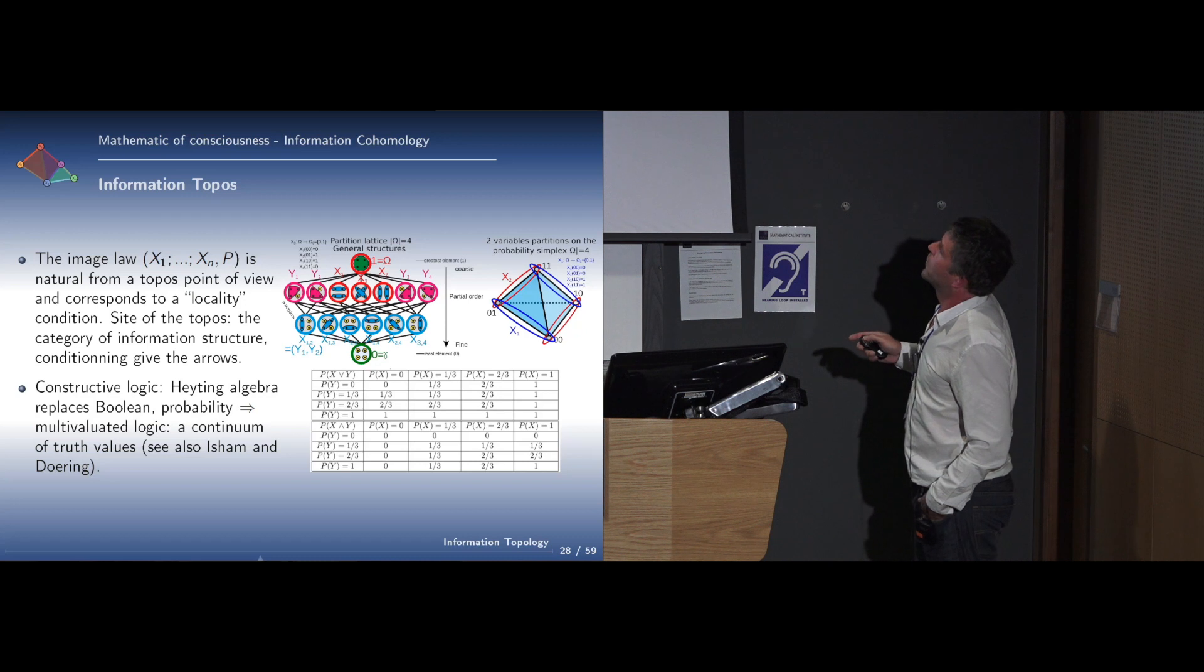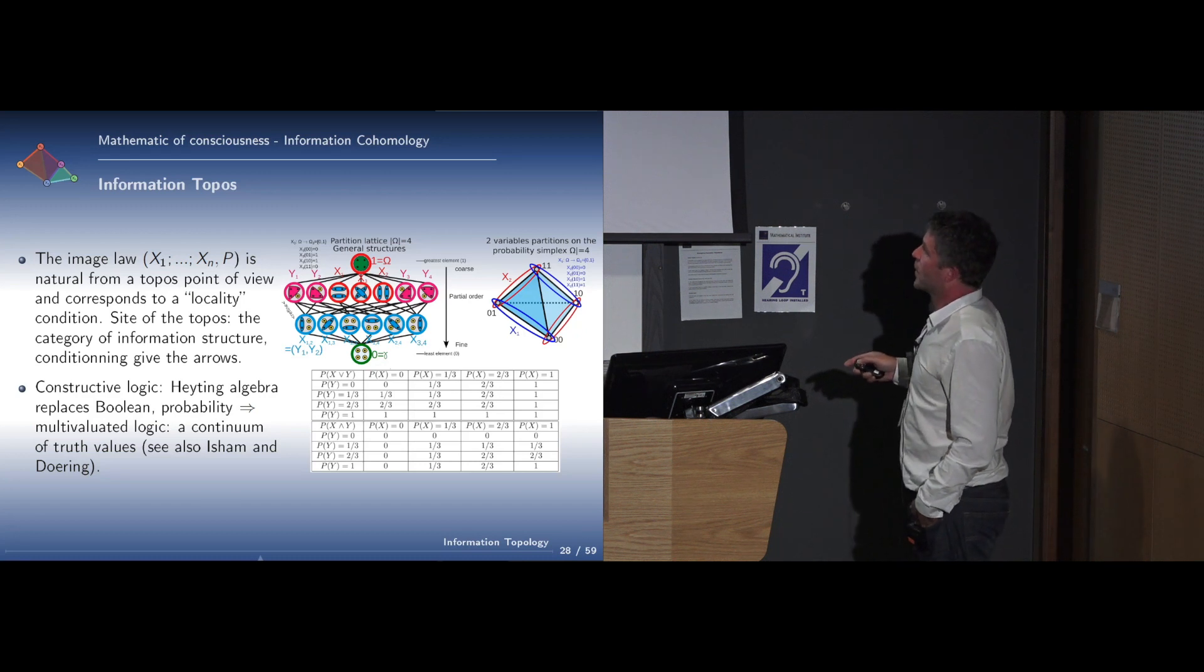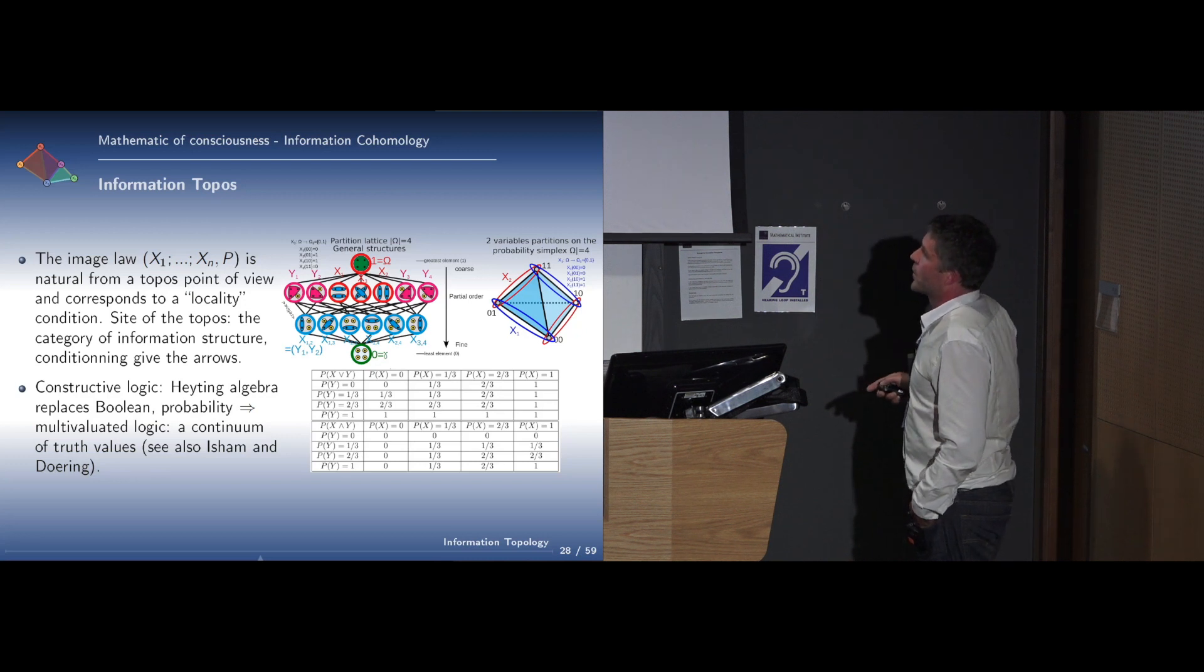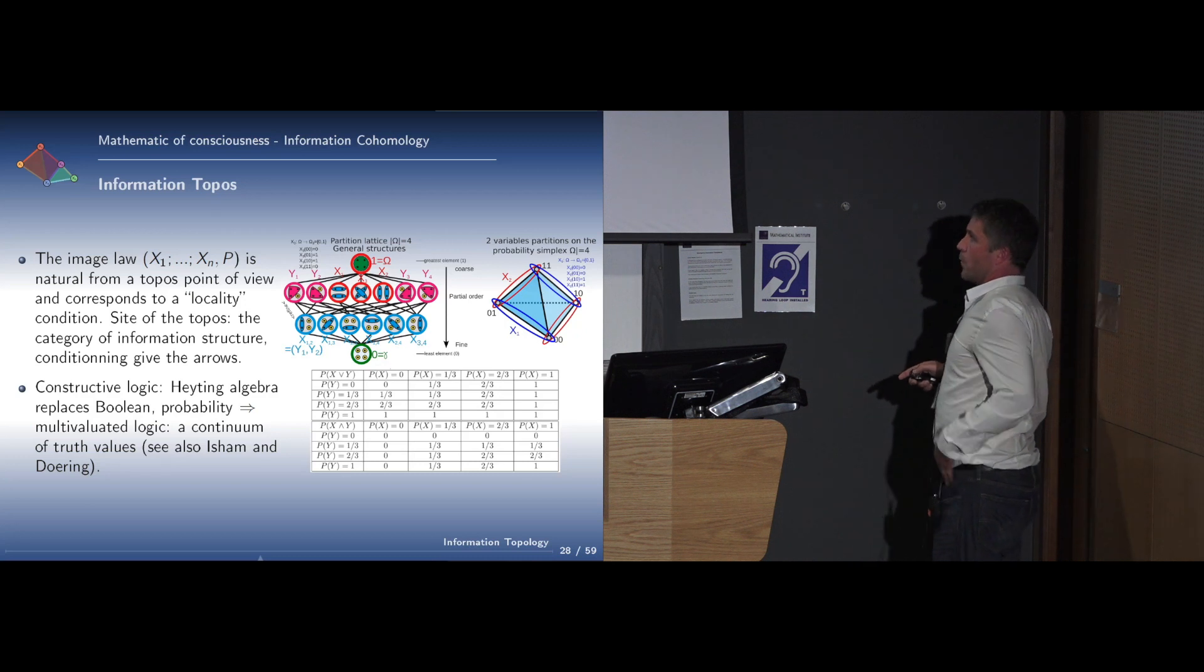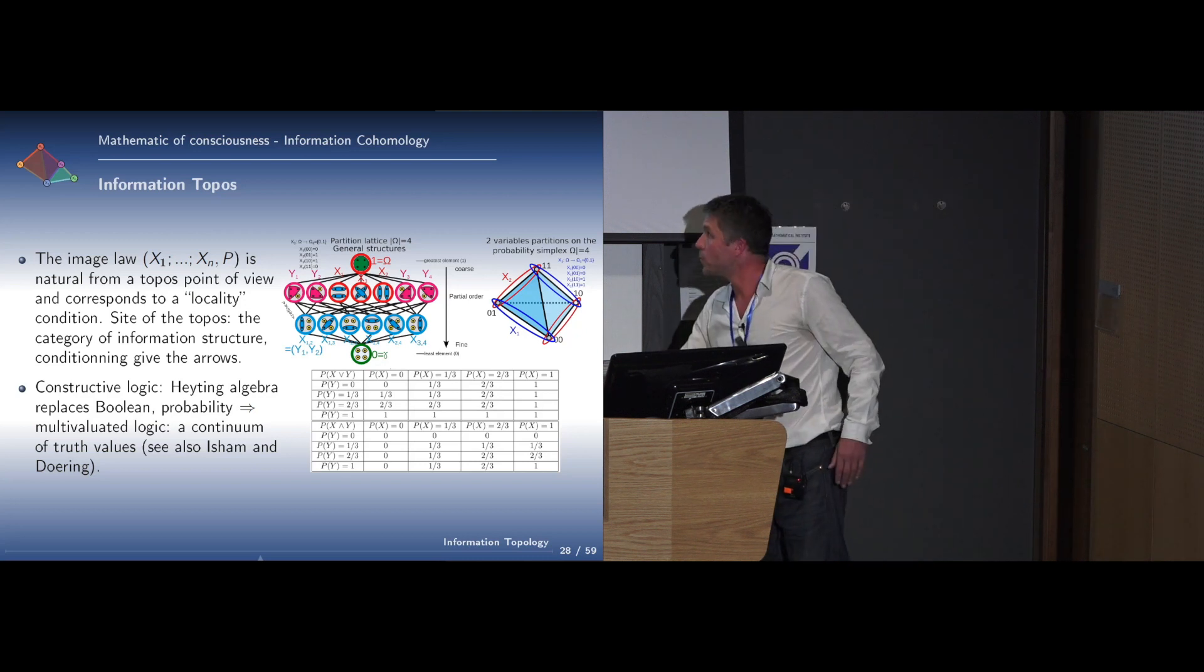It can be formalized within topos theory. The image law of the random variables with the probability law corresponds to a locality condition, which is very important for topos. The site of the topos is the category of information structures. The arrows are the conditioning. This can be important because associated to a topos, there is a constructive logic, which is classically described in terms of Heyting algebras, which represents a generalization of boolean logic, which can correspond to a multivalued logic. For instance, probability can be imagined as a generalization of the binary logic to a continuum of truth.